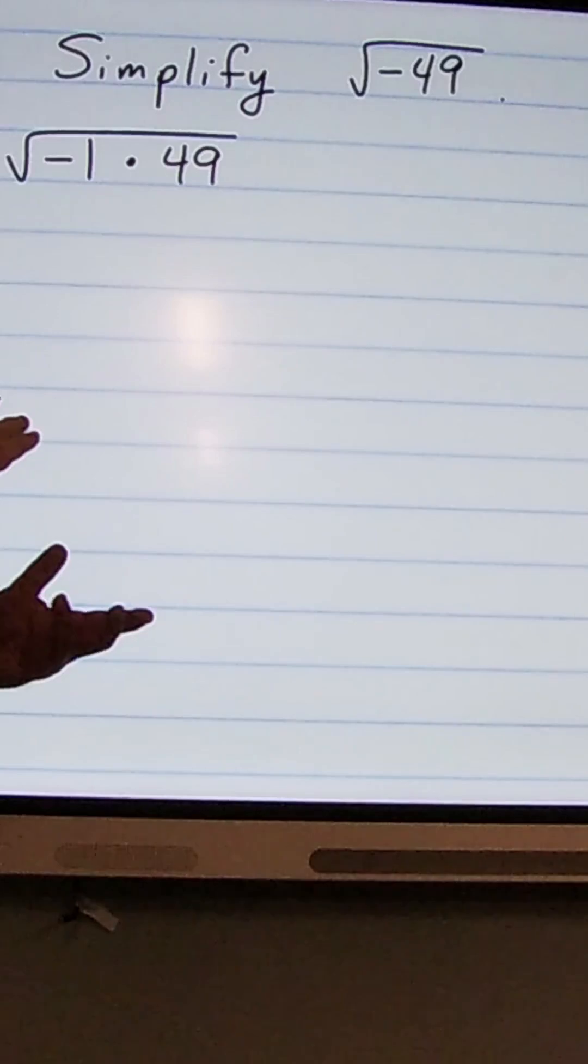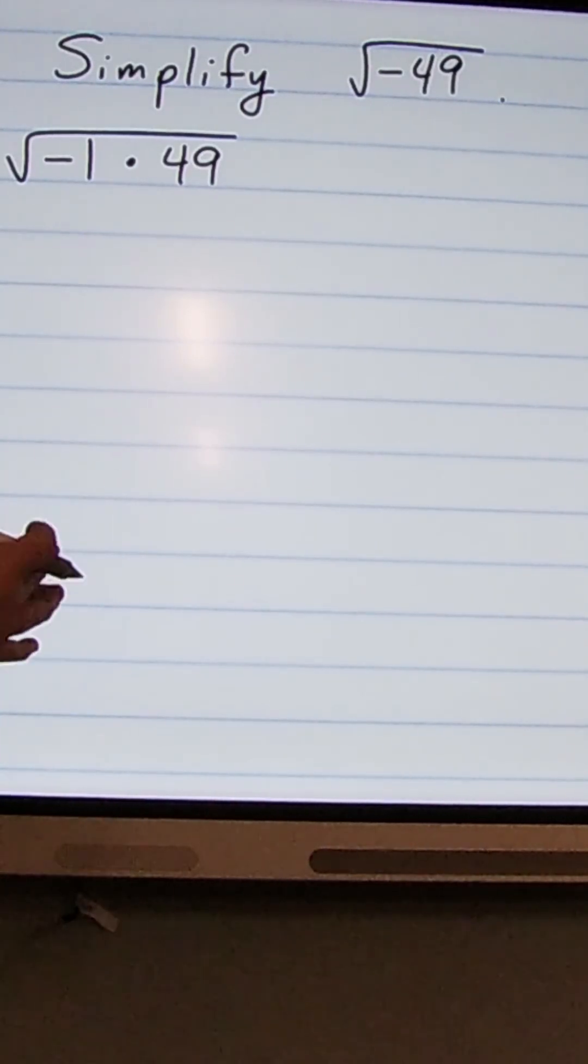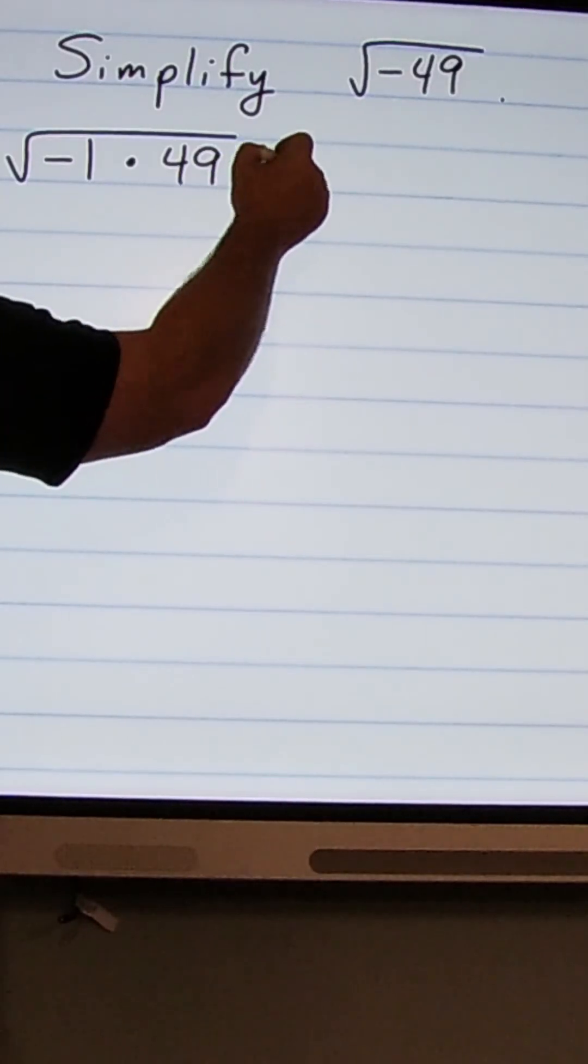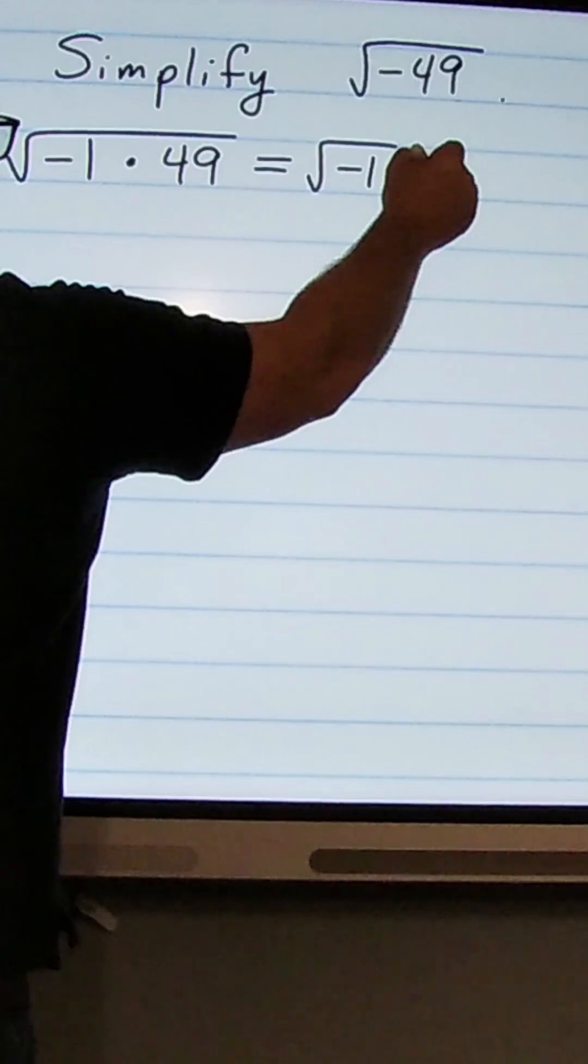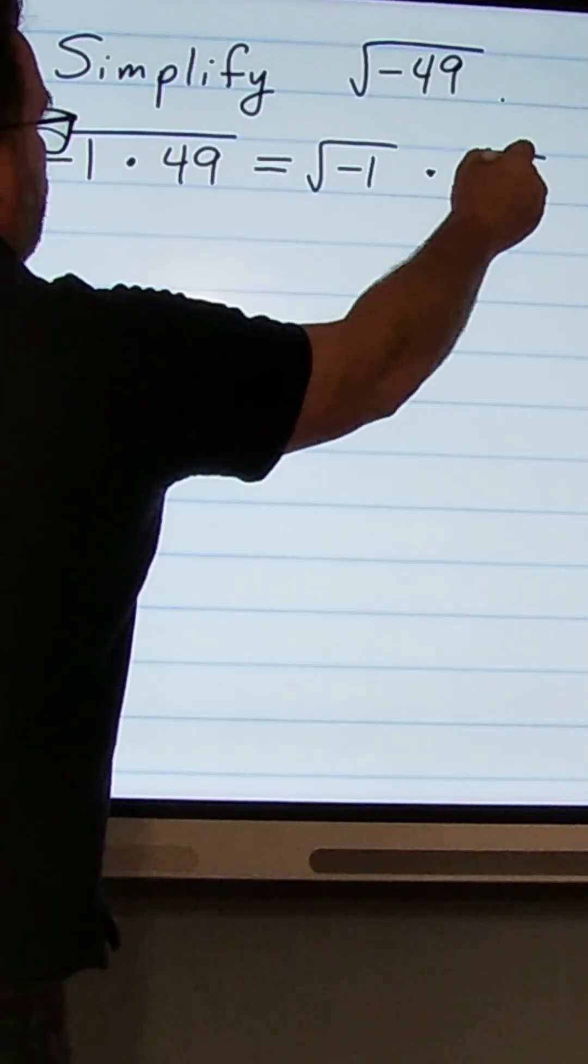And when we have two numbers multiplied together within the square root, we can break those apart into two square roots. So I can write that as the square root of negative 1 times the square root of 49.